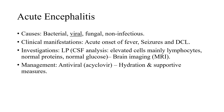Acute encephalitis can be caused by bacterial, viral, fungal, or non-infectious causes. Viral are the most common, and herpes viruses are the most common type. The patient usually presents with a triad of fever, seizure, and disturbed conscious level. This differs from the meningitis triad of high-grade fever, headache, and meningeal irritation signs — in meningitis there is typically no disturbed conscious level. In encephalitis, the triad of fever, seizure, and disturbed conscious level should be evident.